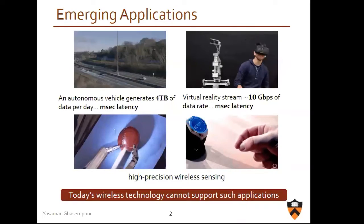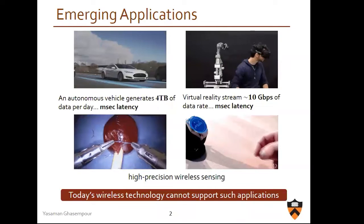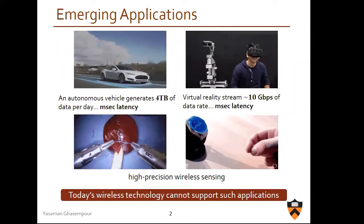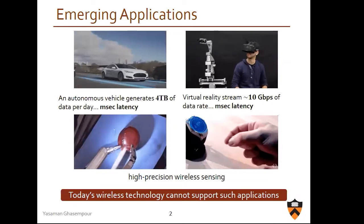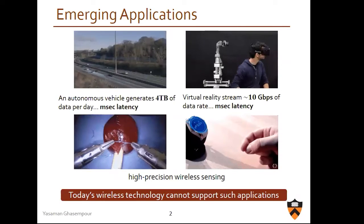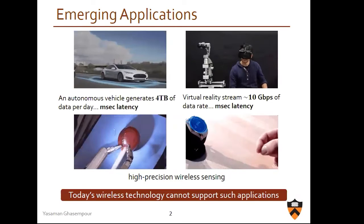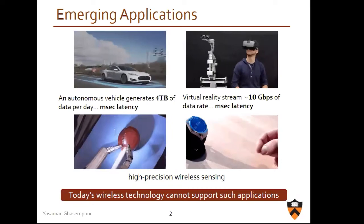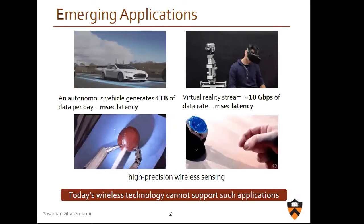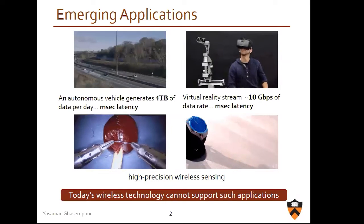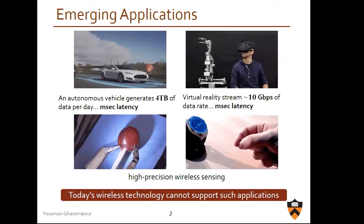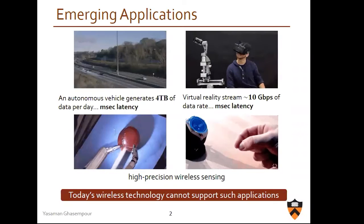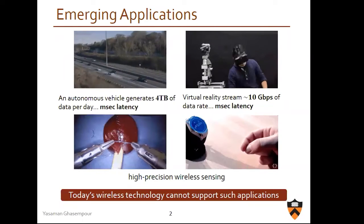A lot of emerging applications — I have a few examples here — use gigabit per second scale data and require very low latency. Autonomous cars are expected to generate four terabytes of data per day. We have mixed reality that requires gigabit per second scale data rate and microsecond scale latency. We also have various wireless sensing applications making robot interactions that require high precision indoor accuracy, down to sub-centimeter per day. We're talking about remote surgery, for example. Unfortunately, today's wireless technology cannot support the data rate and latency required to support these very demanding applications.